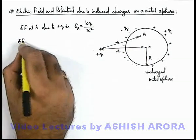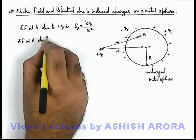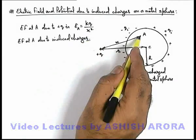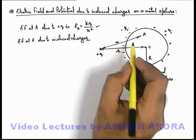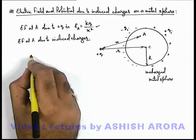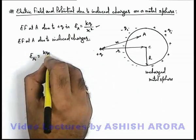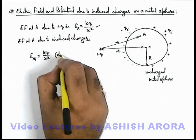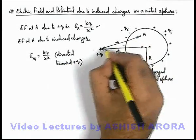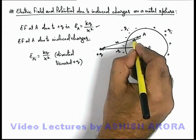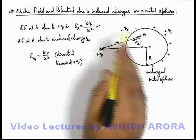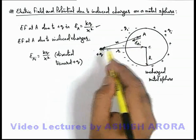So we can say the electric field at a due to induced charges can directly be given by the value which is exactly equal and opposite to the electric field due to the external charge, so that the net electric field at point a will become zero. Therefore, electric field at a due to induced charges must be numerically equal to kq/x², and it is directed toward the charge +q. So at point a, the electric field due to induced charges exists in that direction with magnitude exactly equal to that produced by the external charge at point a.